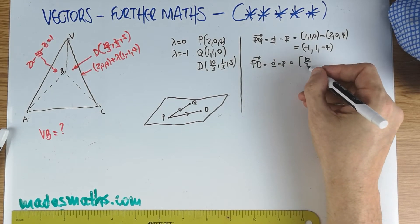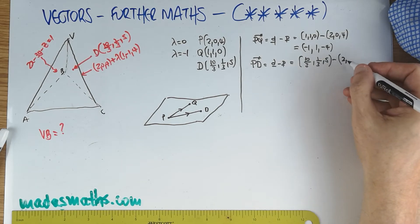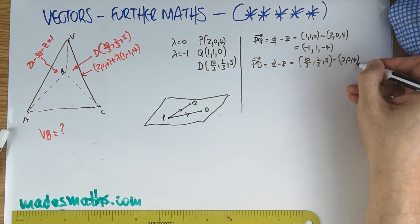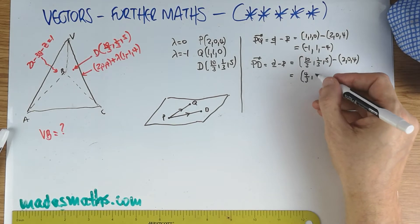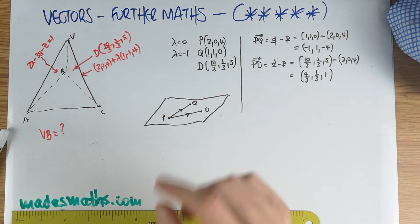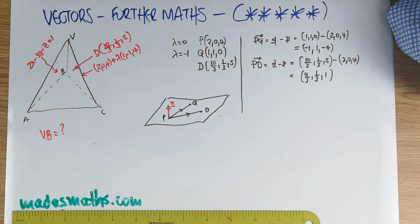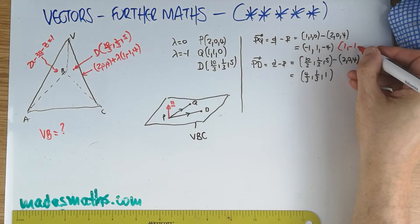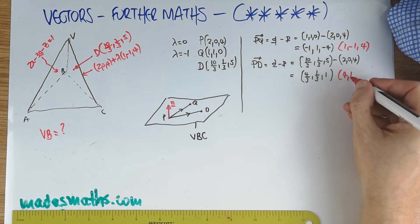And the point D is this ugly coordinate. 10 thirds, 1 third, 5, minus the vector P, which again is going to be 2, 0, 4. And 10 thirds, take away 2, is positive 4 thirds, 1 third, take away nothing, is 1 third, and 5 minus 4 is 1. And I'm going to scale, because these are directions that I'm going to use to get basically a normal and the equation of the plane. Then that's the normal to the plane. Which plane is that? VBC. So there's this plane face here. I'm going to scale these two vectors. Less minuses is good. 1, minus 1, 4. And multiplying it by 3, I'm going to get the vector 4, 1, 3.